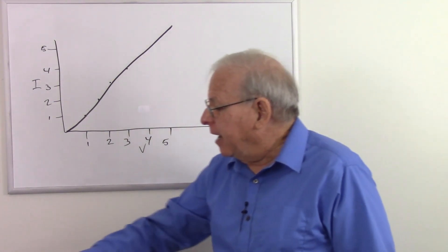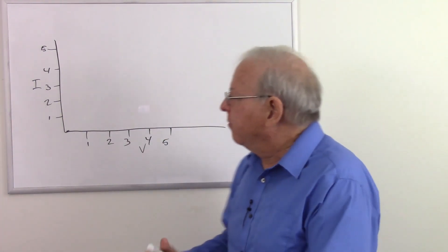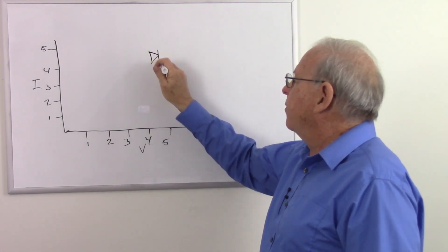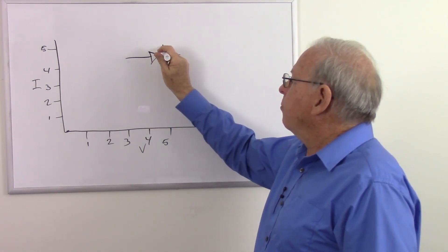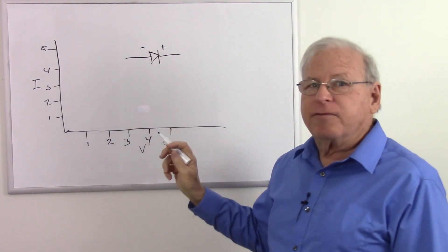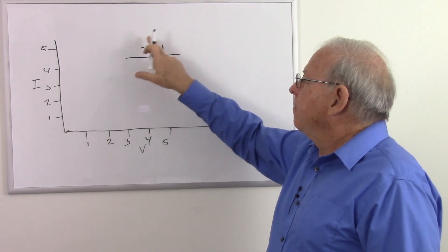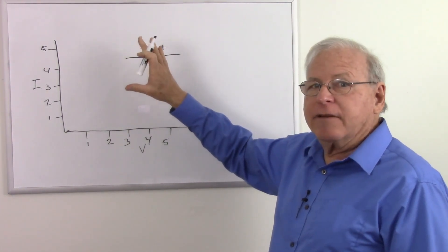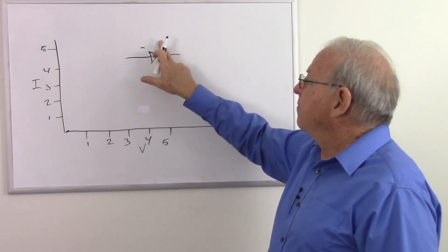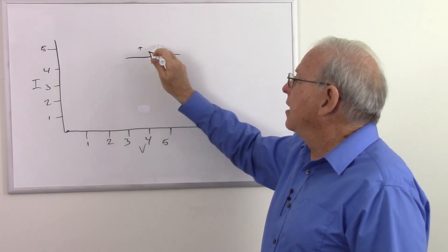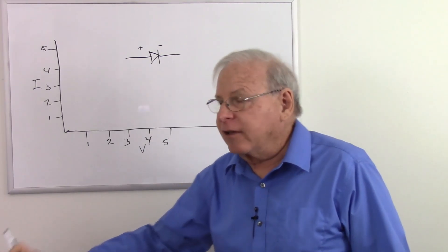But what happens with a diode? The diode acts differently. We have a forward bias diode — here is the symbol for our diode. If I put my most positive voltage at the cathode and most negative at the anode, that diode is reverse biased. If I bias it positive to the anode, negative to the cathode, the diode is going to conduct. But it doesn't conduct like a switch.